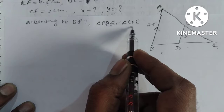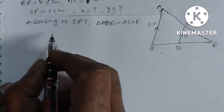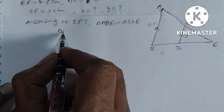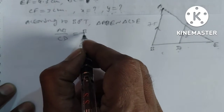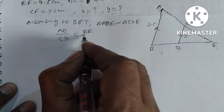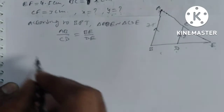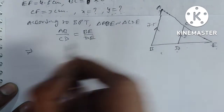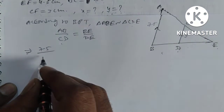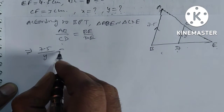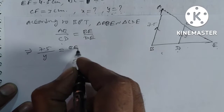Since the triangles are similar, corresponding sides ratios are equal. So, AB by CD is equal to BE by DE.